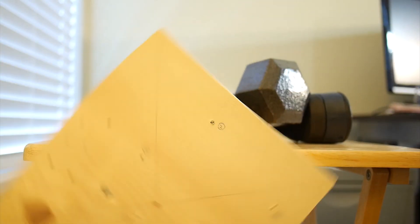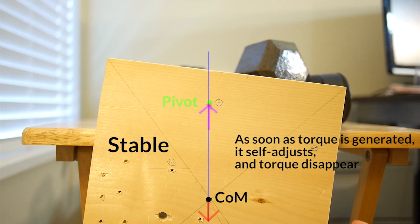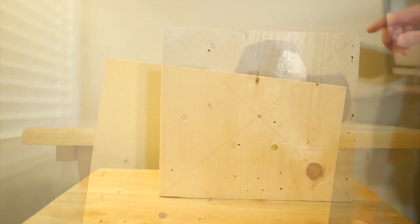So relative position of the center of mass to the pivot point is important for the stability of the object. In general, when the center of mass is located below the pivot point, it is considered to be more stable against gravity.